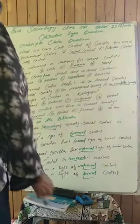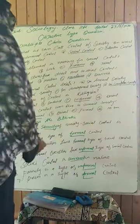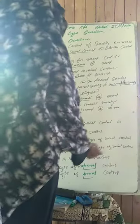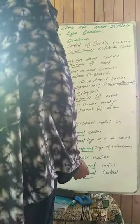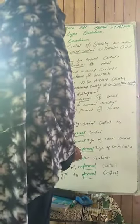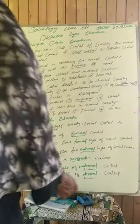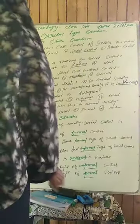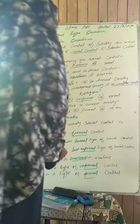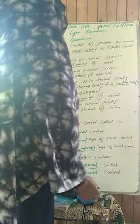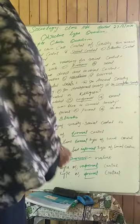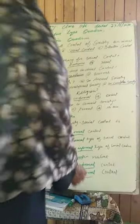Number five: social control is blank in nature. Joh social control hai, woh kya hai? It is universal in nature. Number six: family is a blank type of control. Joh family hai, woh control ka kaunsa type hai? Family is informal control.